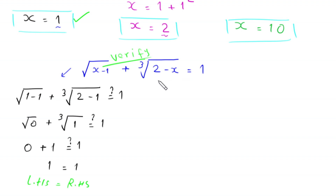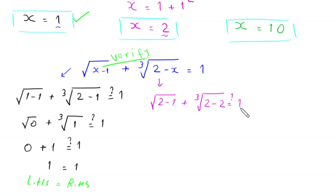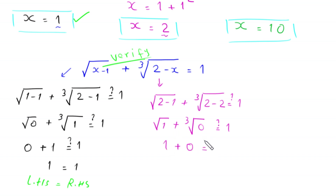When x equals 2, this becomes square root of 2 minus 1 plus cube root of 2 minus 2, which is square root of 1 plus cube root of 0. That gives 1 plus 0 equals 1, which equals 1. The left hand side equals the right hand side, so x equals 2 is also a valid solution.